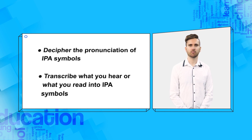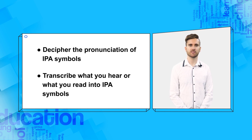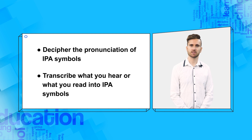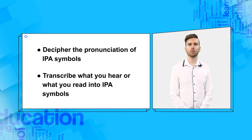We learned about the IPA in Unit 2 of this MOOC — the system of symbols which can represent the sounds in all the world's languages. Your knowledge of the IPA mustn't be confined to phonetics only, as we build upon your existing knowledge in this unit. From this point in your journey into linguistics, you not only need to decipher the pronunciation of IPA symbols, but you also need to transcribe what you hear or read into IPA symbols. I want to share some tips to ensure your IPA transcriptions are as accurate as possible.